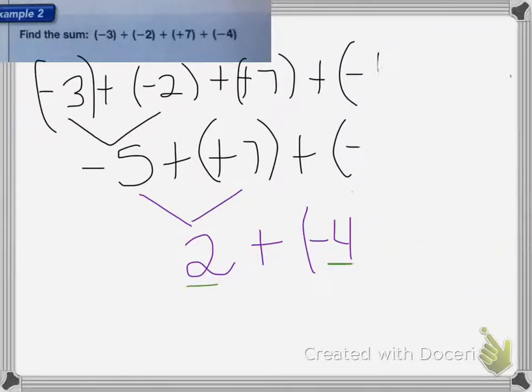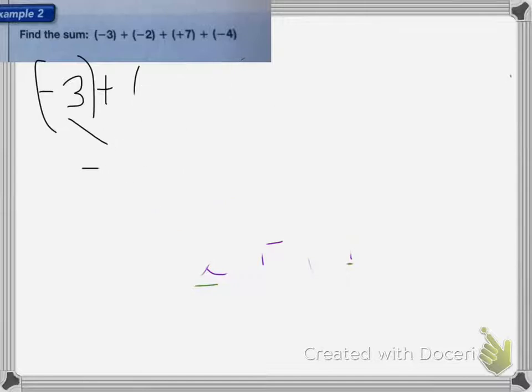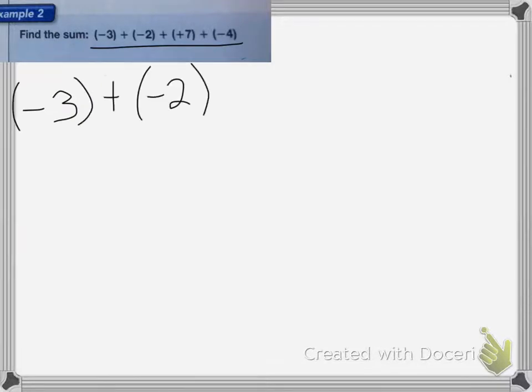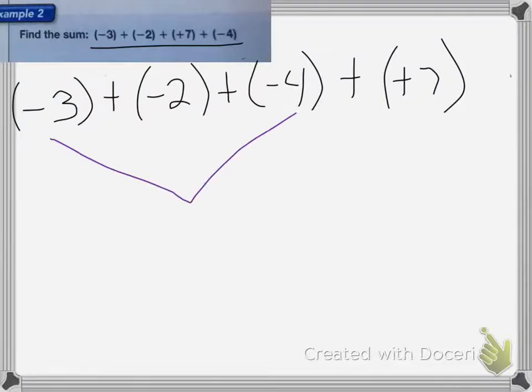The second way you can do it is to group like terms together. I'm going to use the commutative and associative properties to rearrange these numbers so that I have all my negative numbers grouped together and all the positive numbers grouped together. So I'll change it to negative 3 plus negative 2 plus negative 4 plus positive 7. Now I can group all my like terms. Negative 3 plus negative 2 plus negative 4 equals negative 9, and then I have plus positive 7. So negative 9 plus positive 7 equals negative 2.